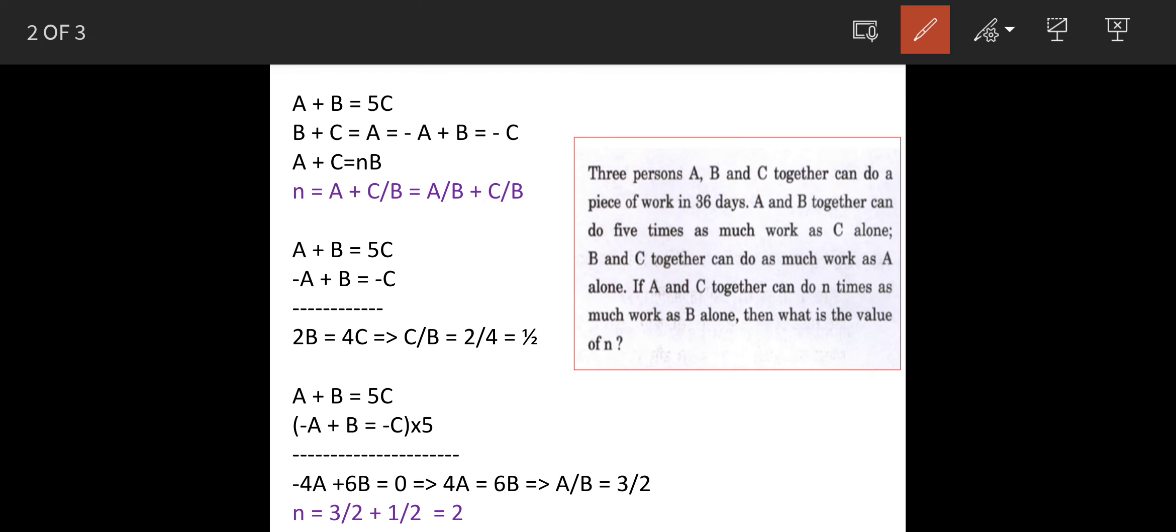We will first formulate the equations as per the rate of work given. So A plus B can do 5 times the work as compared to C. So A plus B is equal to 5C.